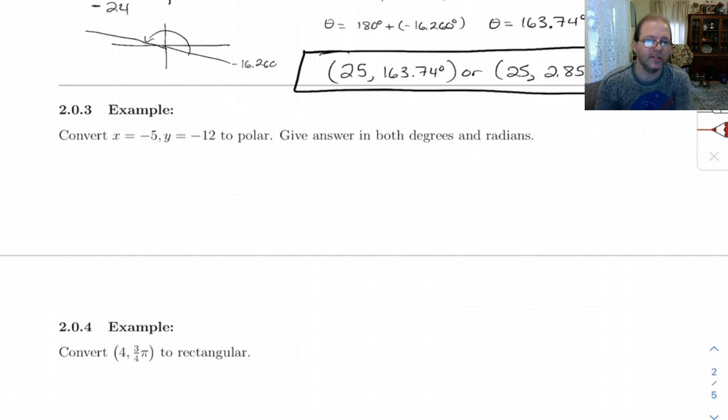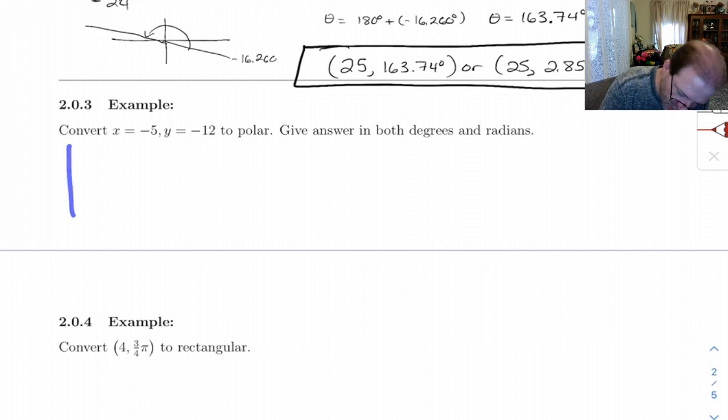All right, let's look at this one. X is negative 5 and Y is negative 12. So now we're in the fourth quadrant. No, no, we're in the third quadrant.